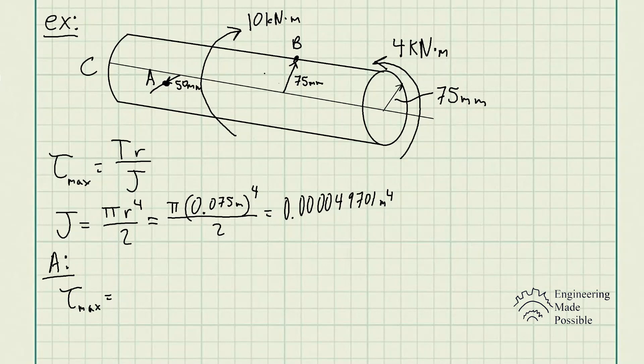However, it's being negated or there's a torque going in the opposite direction of 4 kilonewton meter. So initially, it's going to twist due to that torque. However, it's going to cancel a portion of it out due to the 4 kilonewton meter at the end.